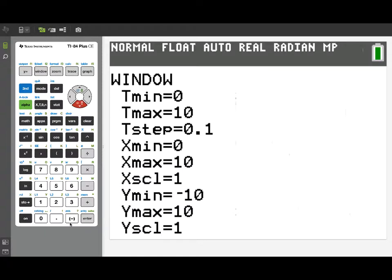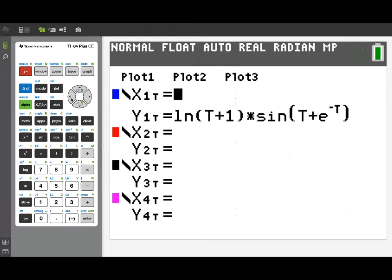I'm going to adjust the window a little bit, xmin and xmax 0 to 10, ymin and ymax from negative 4 to 4, and now we're ready to graph and see our velocity function. Let's turn it on and graph.